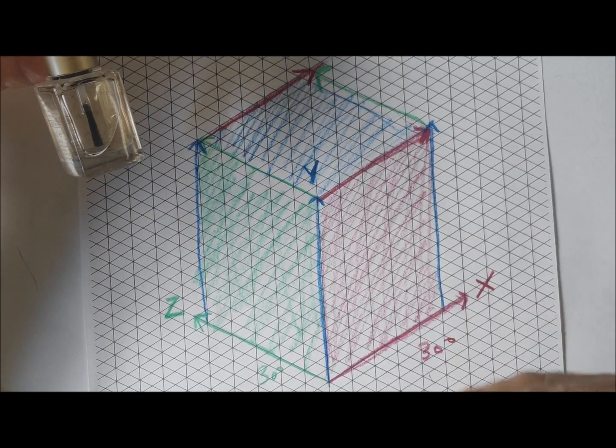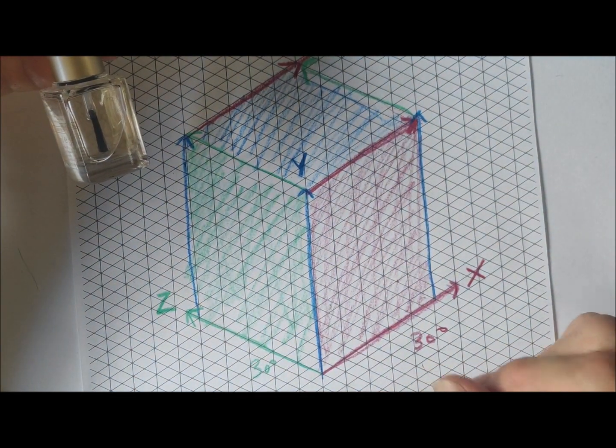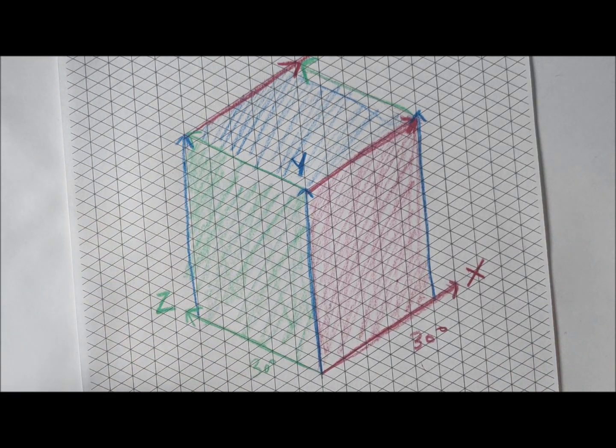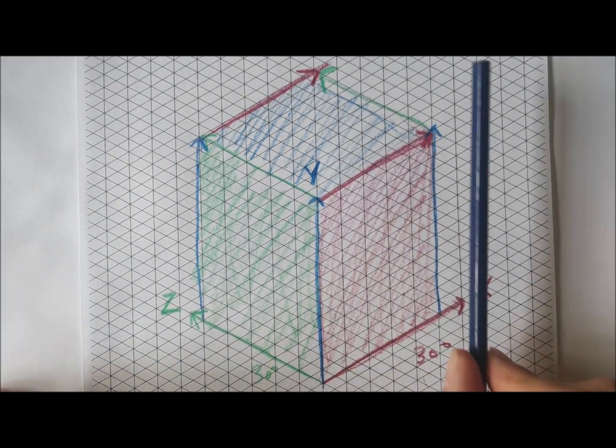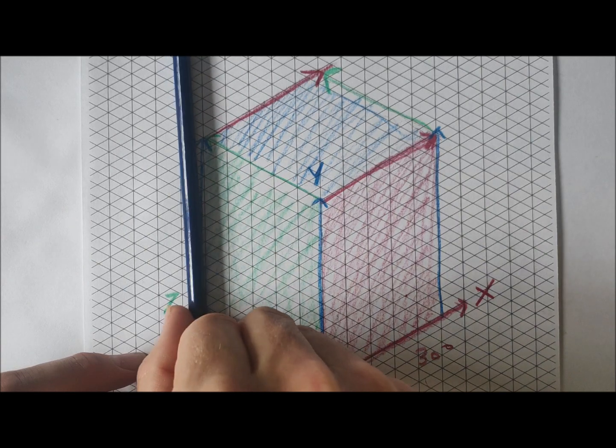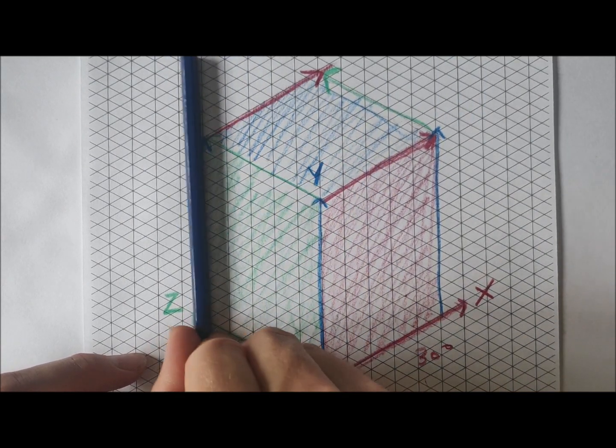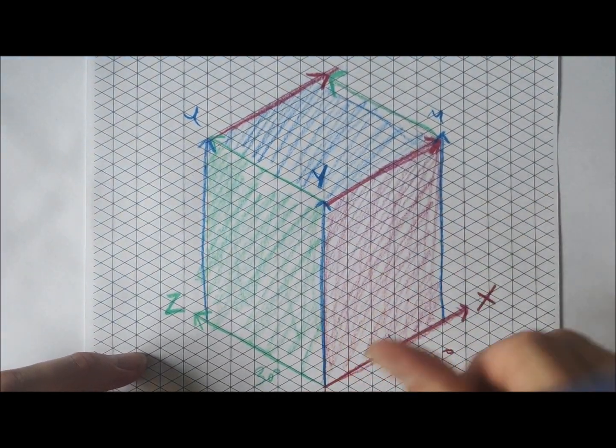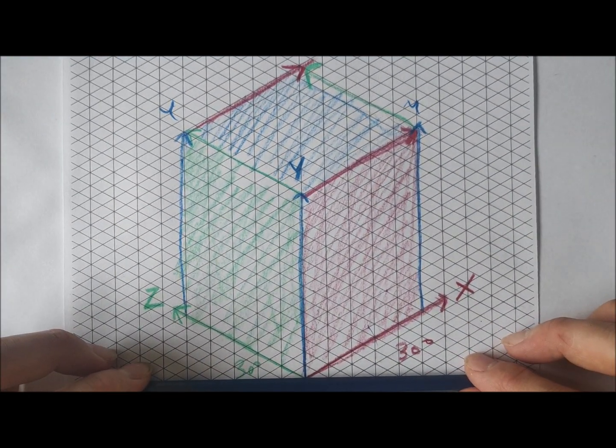So what you've done there is you've created a three-dimensional cube using the isometric drawing technique. Now to check your work, what you can do is just to check to make sure that all of the lines on this up-down plane, or as I'm calling it, the Y-plane, so this one, this one, and this one are all 90 degrees to the bottom of the sheet.